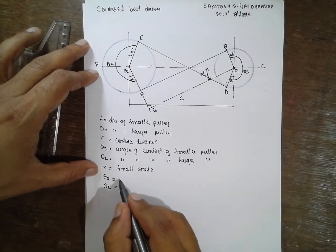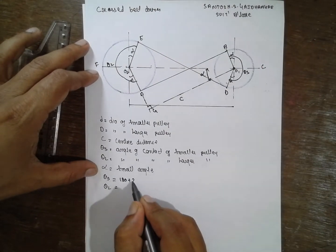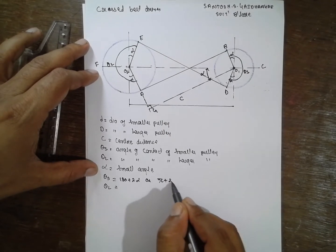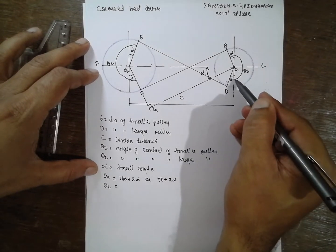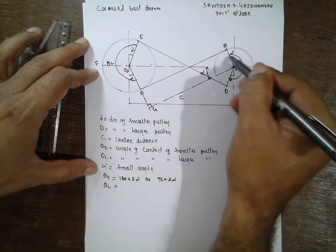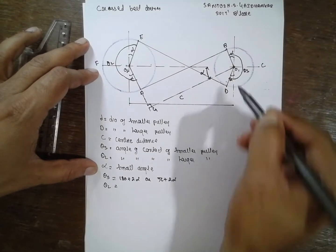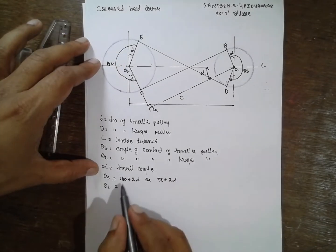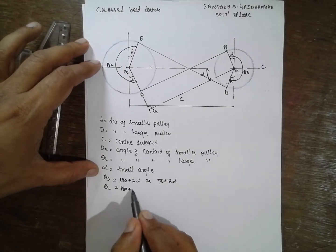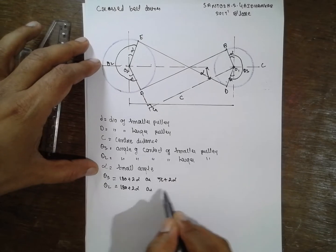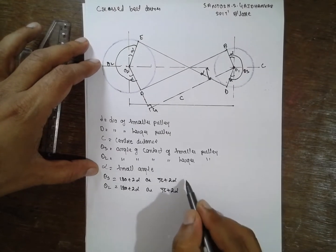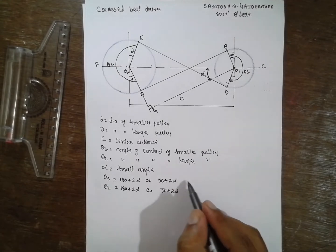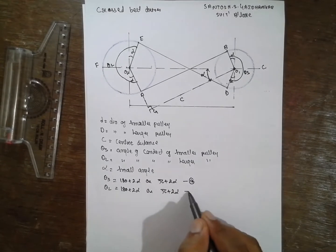What is thetaS? ThetaS is nothing but 180 plus 2α, or π plus 2α from the diagram. This gives 180, and the 2α is added — this one alpha and one more becomes 2α. For thetaL, it is the same: 180 plus 2α, or π plus 2α. I call these equation A and equation B.